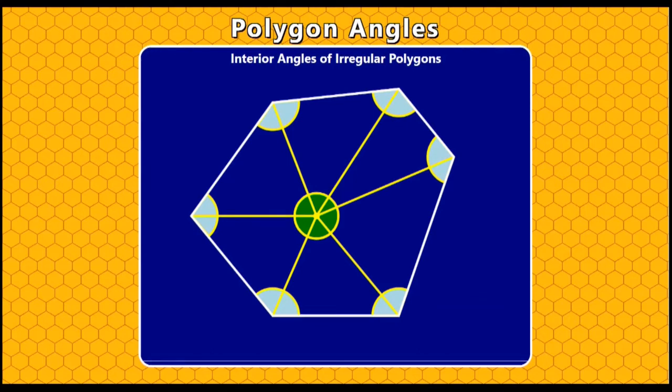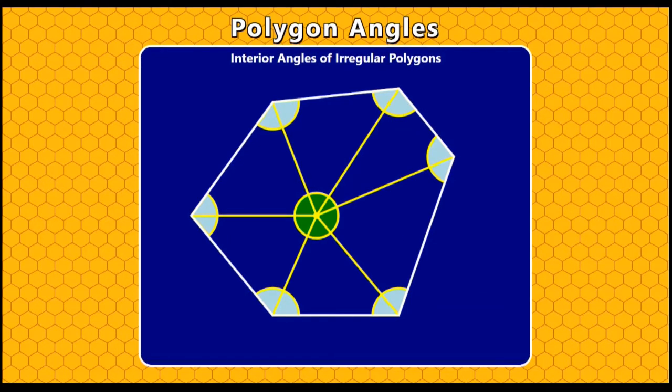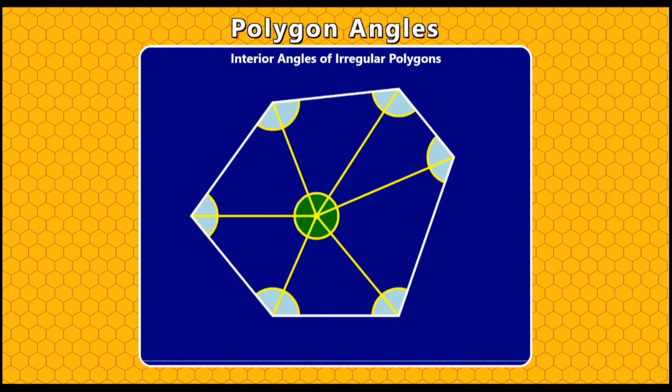So to sum up, to find the sum of all of the interior angles of an irregular hexagon, first split it into triangles from any point within it. And then you multiply 180, that's the angle sum of a triangle, by six. And then subtract the angles we don't want - that's the 360 degrees at the middle or at the point that you drew the lines from.